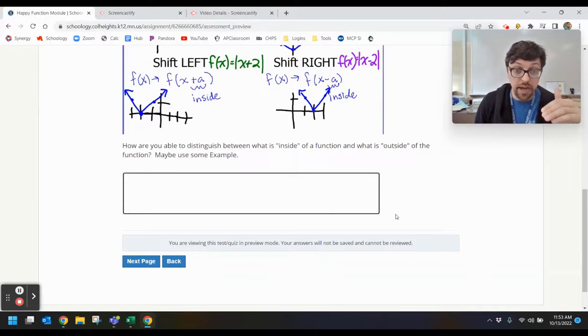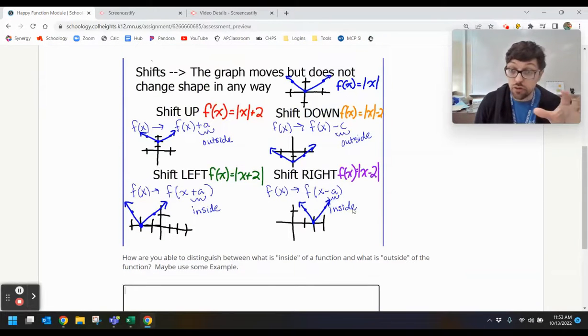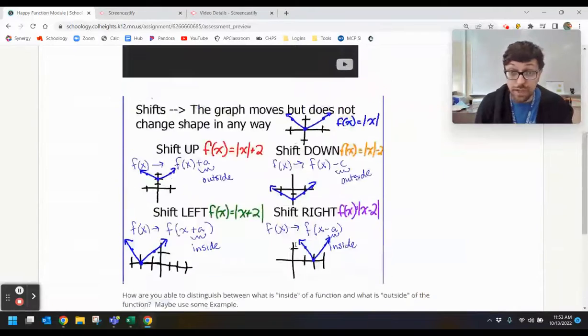And then when you dive into here, this is the transformations I want you to start with. I've done this with an absolute value function. If you would like to use a different function for your shifts, you can, but I think it's a lot easier to just copy these examples down. Again, a question you can answer if you'd like.